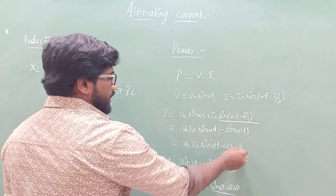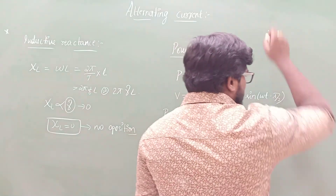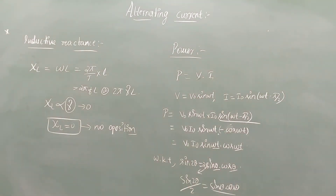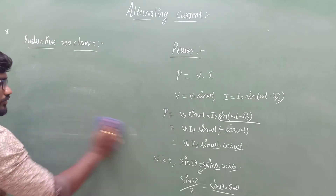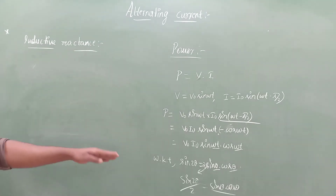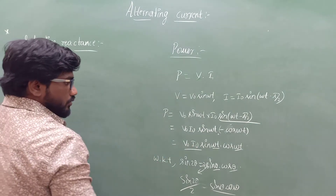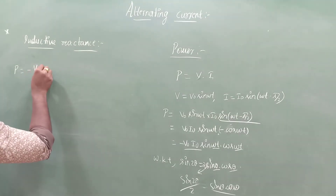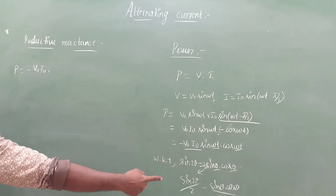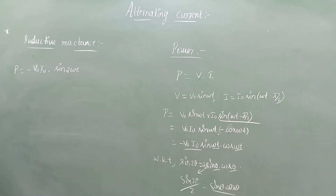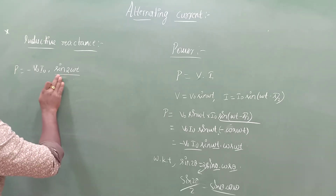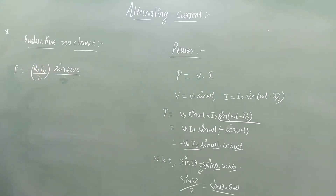Replacing θ with ωt, we get sin(ωt) × cos(ωt) = sin(2ωt)/2. Including the minus sign, P = −V₀ × I₀ × sin(2ωt)/2, or equivalently P = −(V₀I₀/2) × sin(2ωt). Now we need to find the average power over one complete cycle.